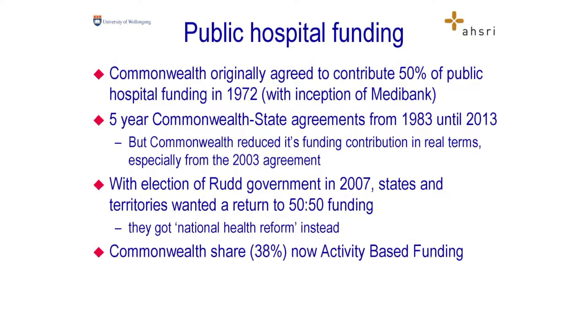I found it really interesting during the health reform debate how many leading medical groups came out and said the problem of the healthcare system can be solved, but the Commonwealth should take it all over. Well, they're not going to. The states and territories own all public health facilities and infrastructure. With the inception of Medicare, the Commonwealth agreed to contribute 50% of public hospital funding to compensate states for money lost from patient co-payments. We had five-year healthcare agreements until 2013 — they have now been formally abolished, and most people working in health haven't worked that out yet. Thirty years of healthcare agreements gone. When the Rudd government came in, the states and territories wanted to return to 50-50 funding; it was at 36% because the Commonwealth had not contributed its share. The Rudd government said no, you're getting health reform instead, which they wanted like a hole in the head. So the Commonwealth is now contributing its share not on a capitation basis but on the basis of funding more and more hospital activity.